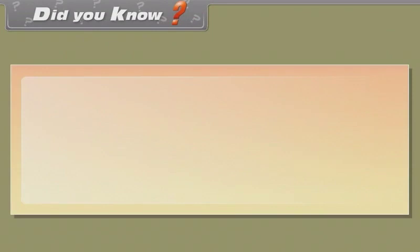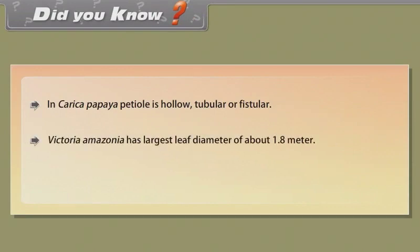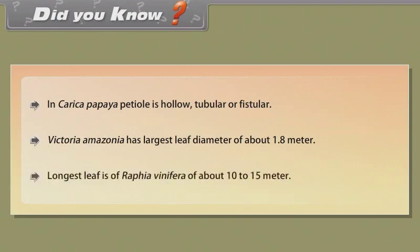Did you know? In Carica papaya, petiole is hollow, tubular, or fistular. Victoria amazonica has largest leaf diameter of about 1.8 meters. Longest leaf is of Raffia vinifera of about 10 to 15 meters.